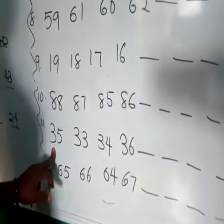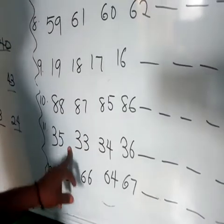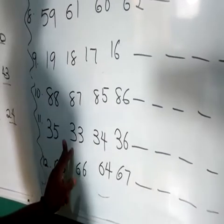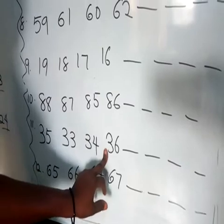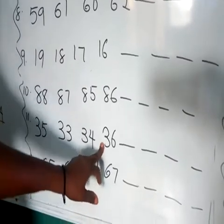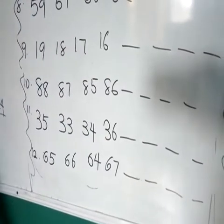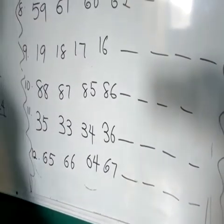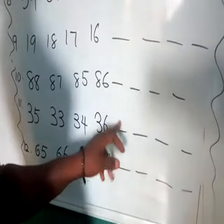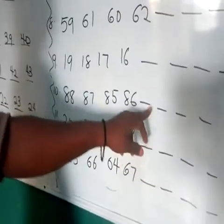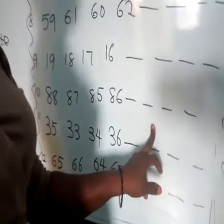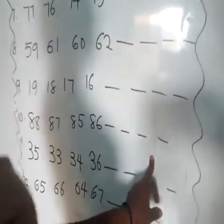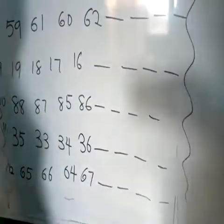Number 11 says: 3 and 5 is 35, 3 and 3 is 33, 3 and 4 is 34, followed by 3 and 6 is 36. Which one comes first? We have 33 as our first number. Let's count: 33, 34, 35, followed by 36.